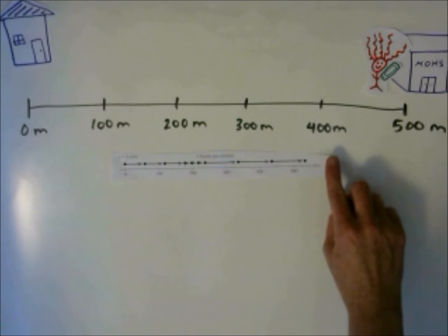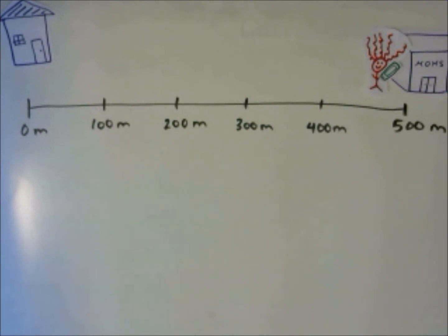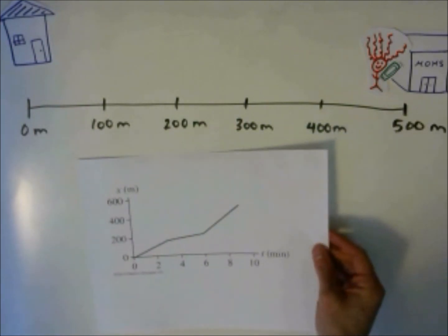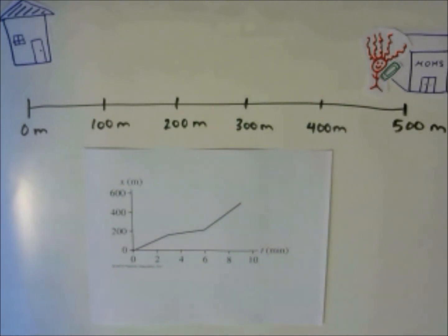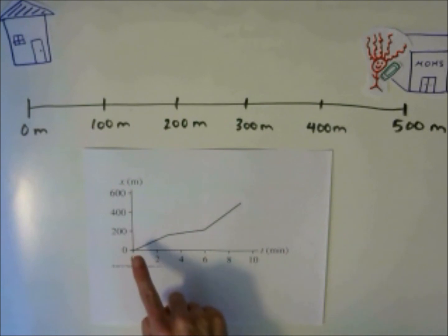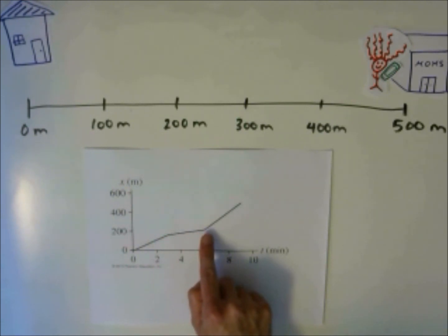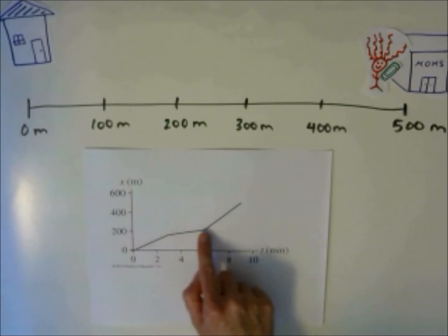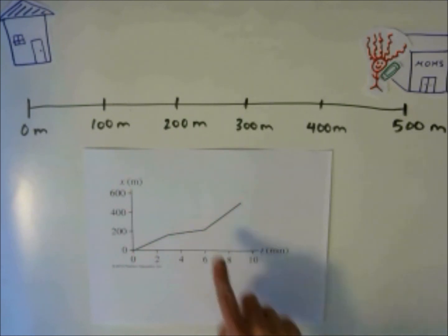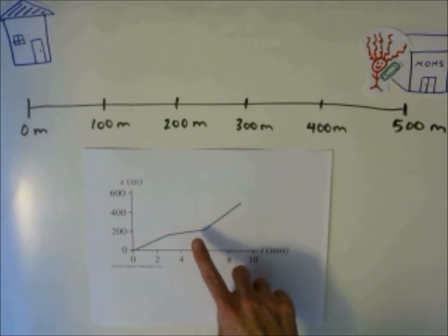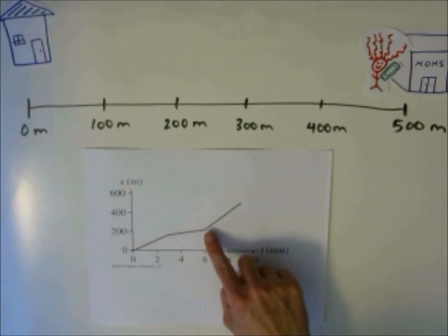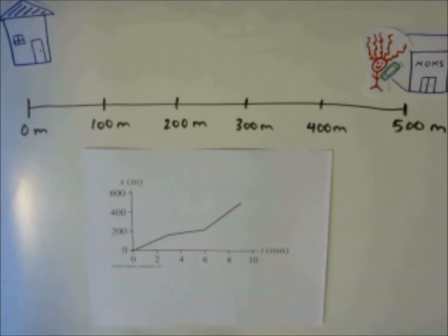Let's look at it on a position-time graph. This position-time graph shows the motion of Francine. She starts by traveling at a steady pace. Then she slows down — you can see that because the slope is lower than the first section. Then, when she reaches about 6 minutes, which is around just past 200 meters, she speeds up again until the end. We can look at this position-time graph and see her speed based on the slope of the graph.